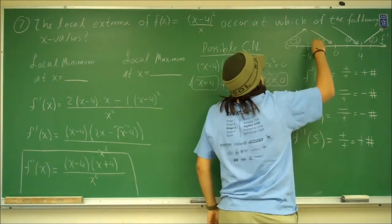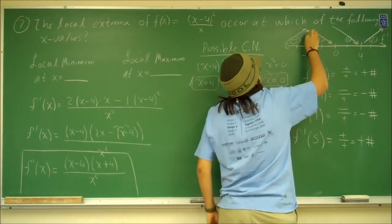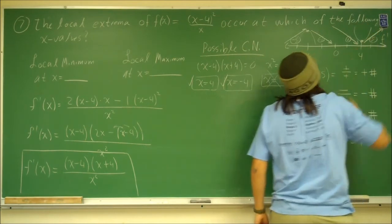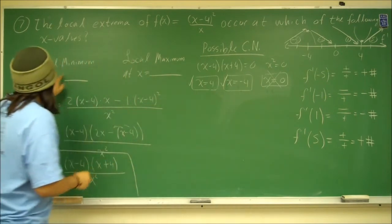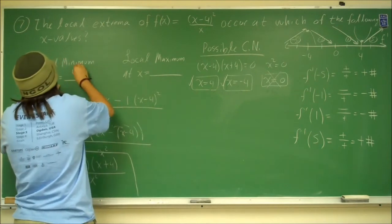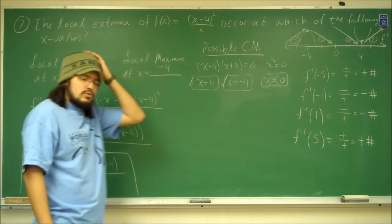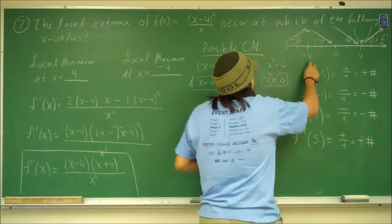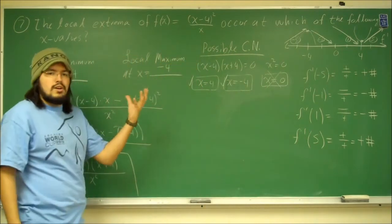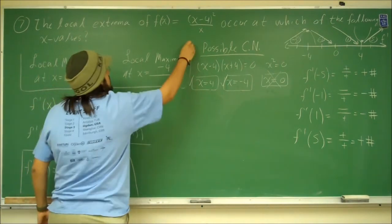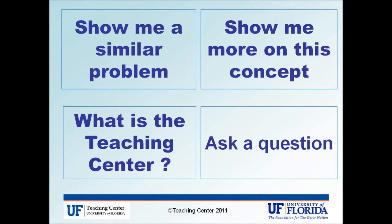So what do we have? The function increases then decreases, so there's a maximum at x = negative 4. The function decreases then increases, so there's a minimum at x = 4. Therefore, local min at x equals 4 and local max at x equals negative 4. If you did want the actual local min and max values, all you'd do is plug these x values back into the original equation to find the corresponding y values. That's it — thank you.